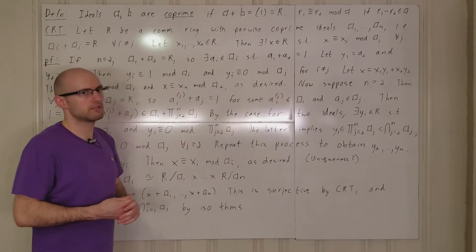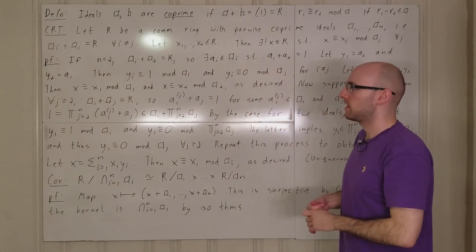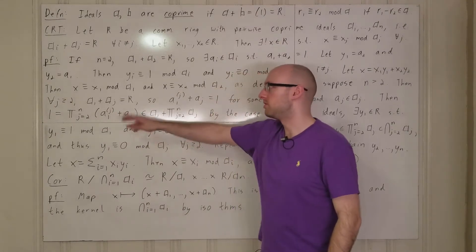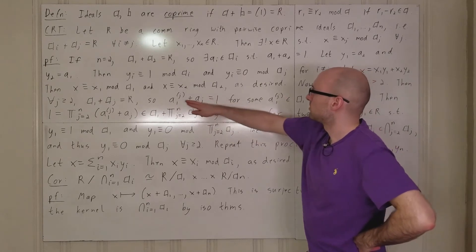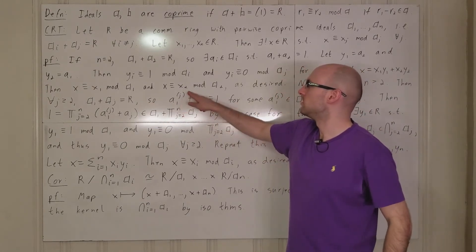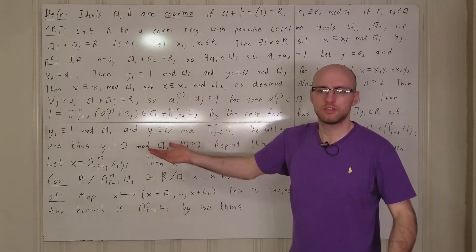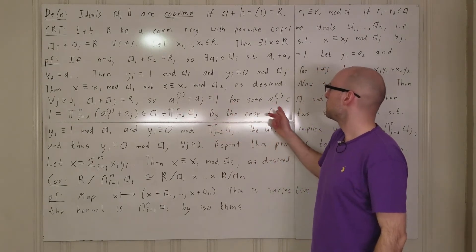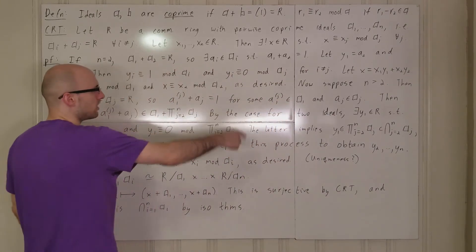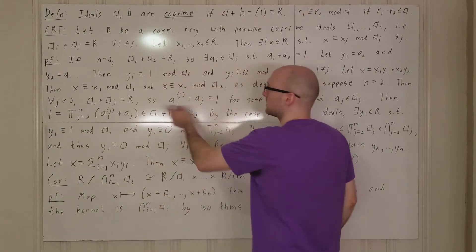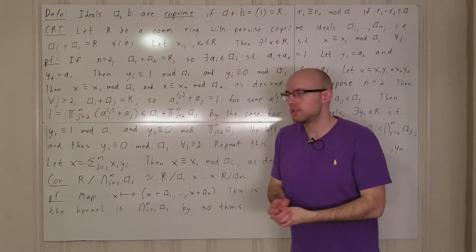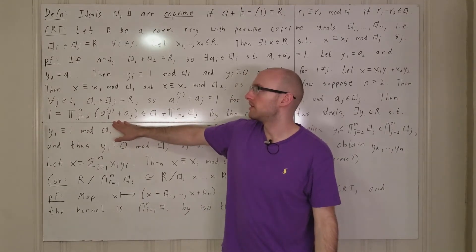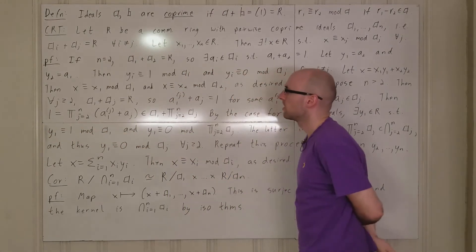Now for n greater than 2: for any j greater than or equal to 2, a1 plus aj equals r, so we can write 1 as a1^(j) plus aj^(j), where a1^(j) comes from a1 and aj^(j) comes from aj. If we multiply these expressions together for j from 2 to n, we're multiplying 1 by itself n minus 1 times, so the product is still 1.